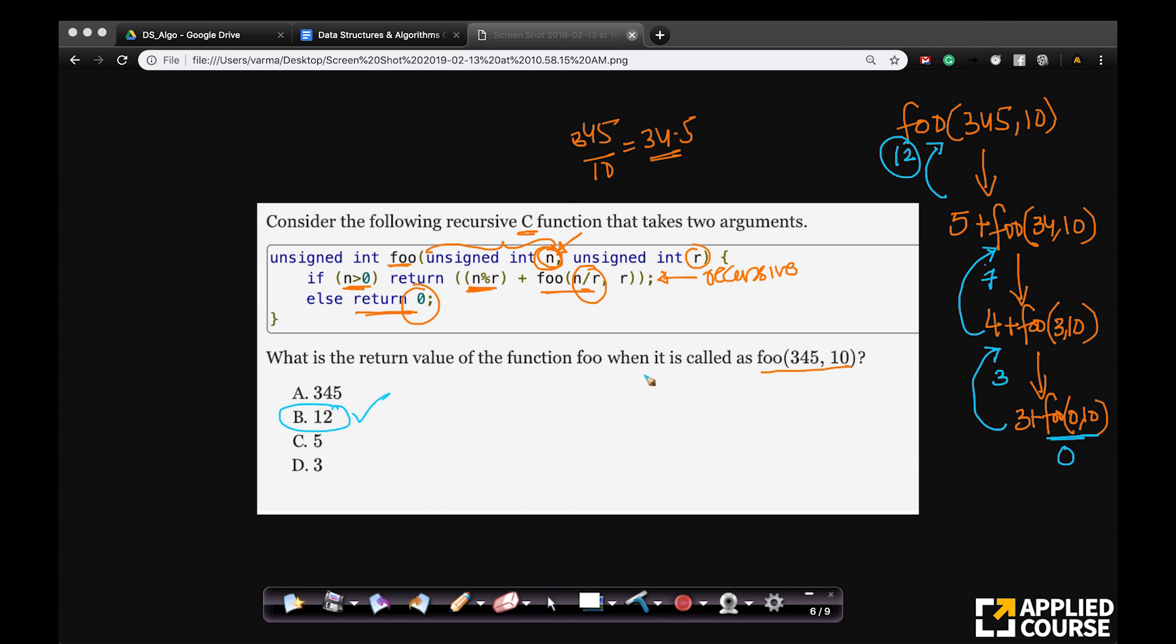Very simple, nothing fancy. If you know, to make this work, you only need to know a couple of things. You need to know how to work out recursion manually. And you need to know about this, that n by r in C programming language. You need to know about modulo operator. And you need to know that when you do this, it rounds it to the integers. That's all you need to know. Very simple problem. Very straightforward problem.